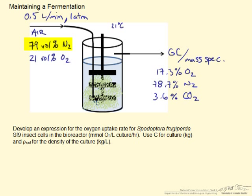That air is composed of 79 volume percent nitrogen and 21 volume percent oxygen. All of the conditions are at 21 degrees Celsius and the outlet for this bioreactor is sent off to a GC mass spec and what we are told is that it is 17.3 percent oxygen, 78.7 percent nitrogen, and 3.6 percent carbon dioxide. Again these are all in volume percents.